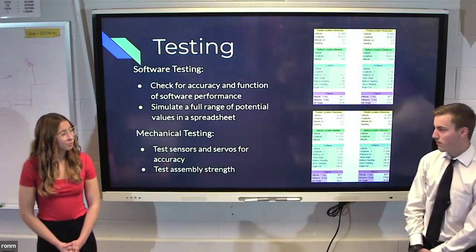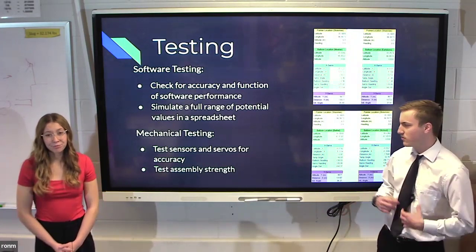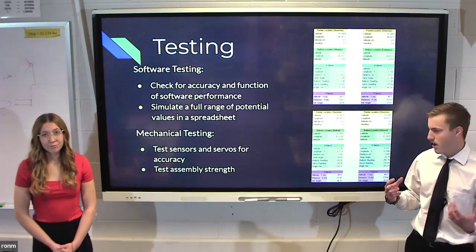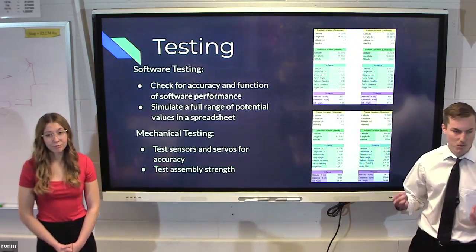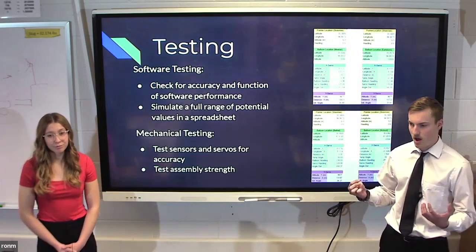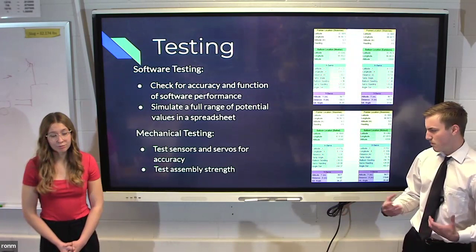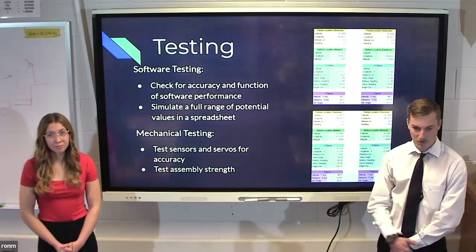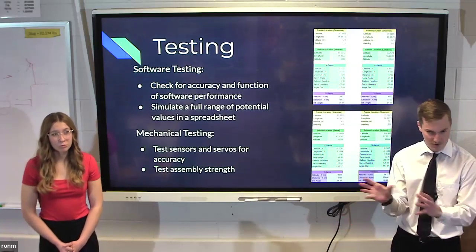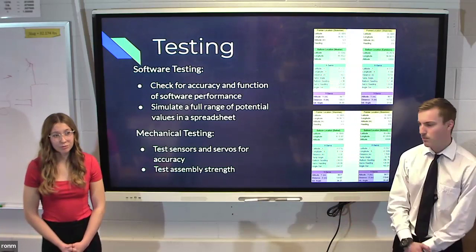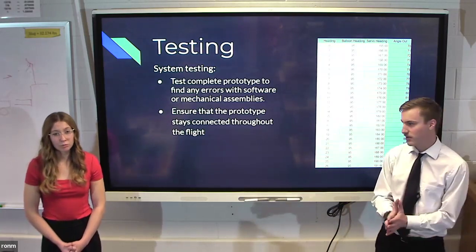So for software testing, basically what we had to do was to make sure our coding worked. And we did this by simulating potential values in our spreadsheet. And for mechanical testing, basically what we did was we made a code, and basically we put values in it to see if the pointer works physically and it gets us the outcome we were looking for. Basically for system testing, we put the software and mechanical testings together.